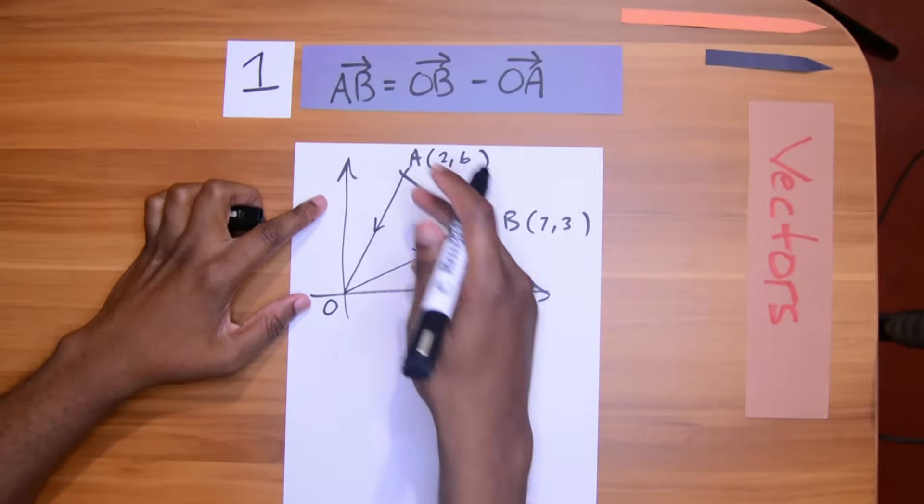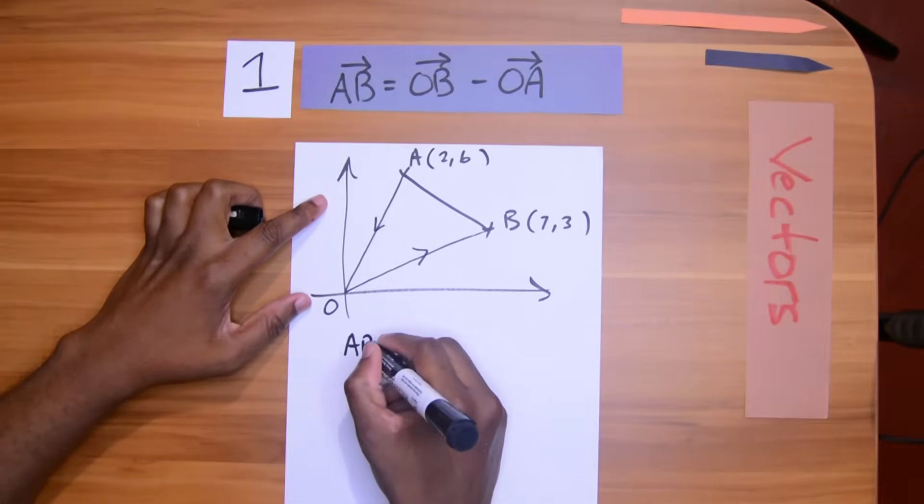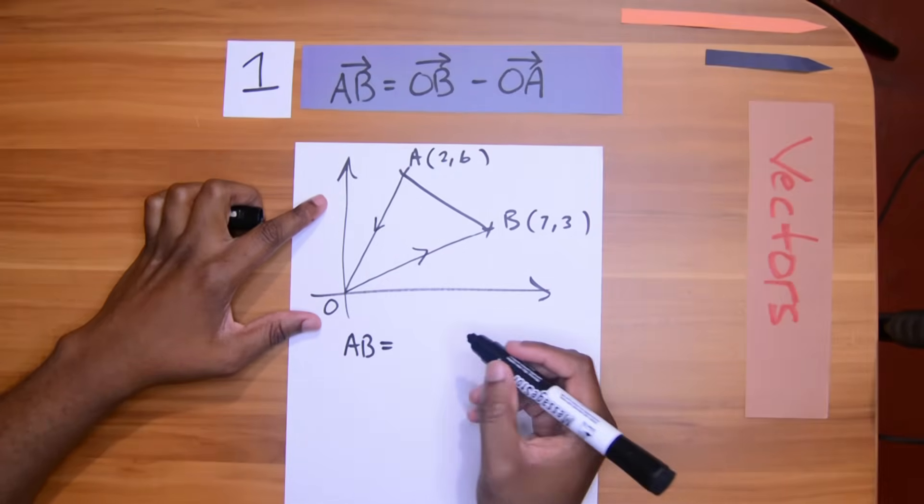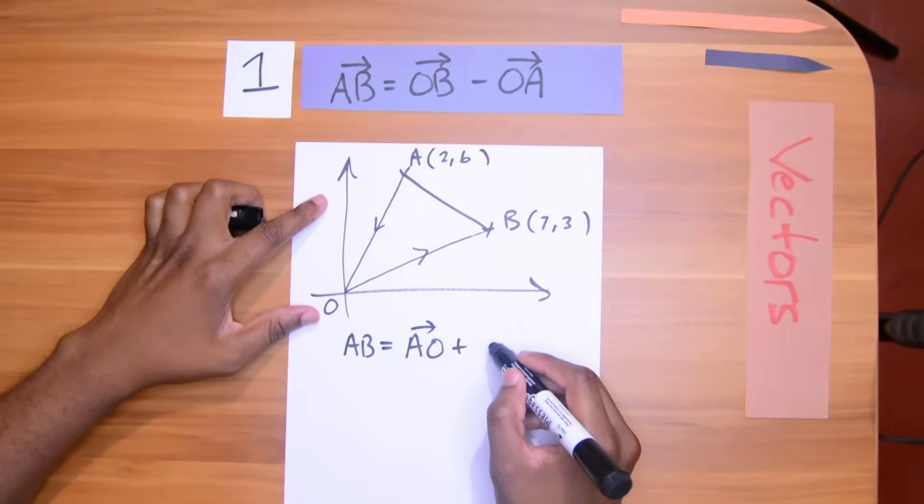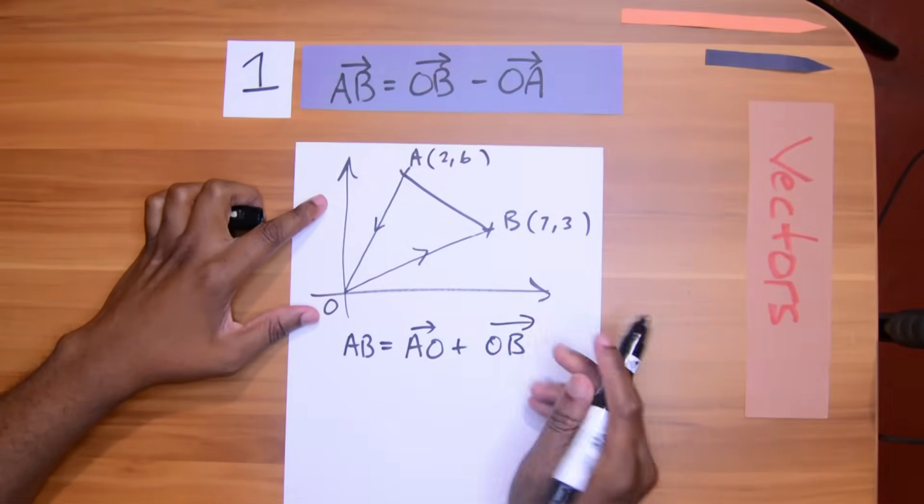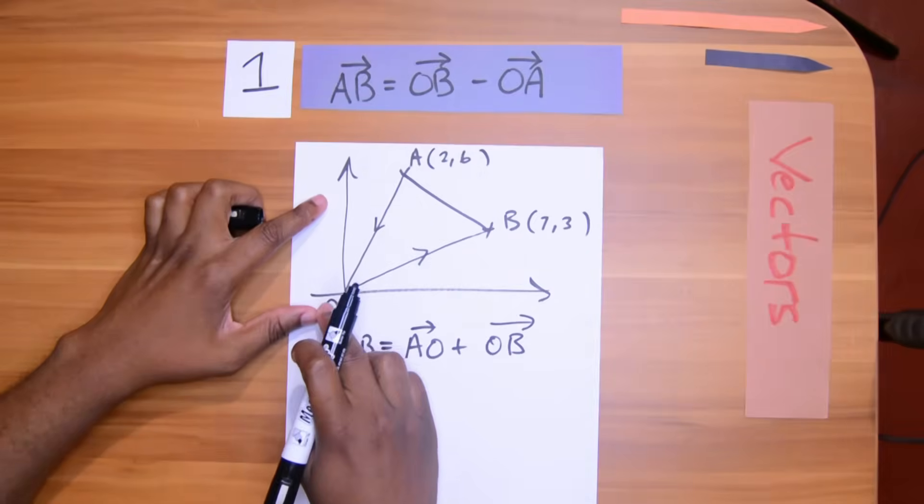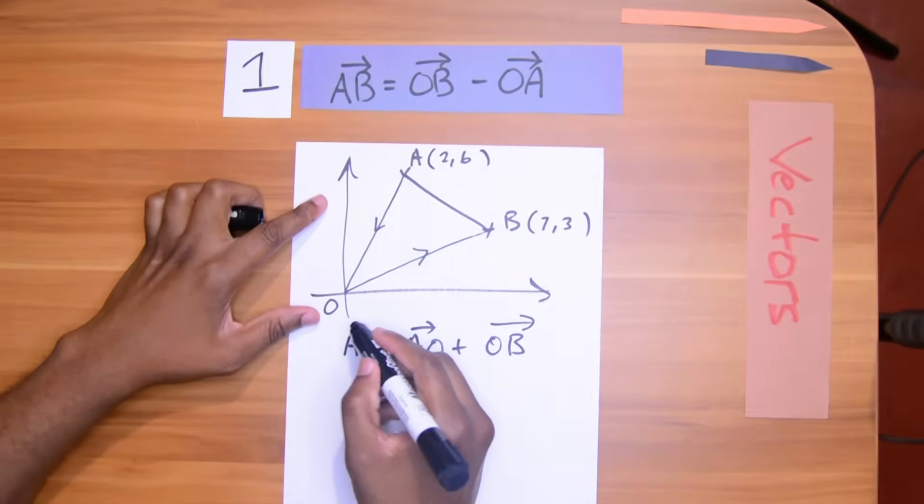So I am saying AB is the same as AO, that's this vector coming here, plus OB. It's the same as if I went AO, then OB. AB is the same as that.